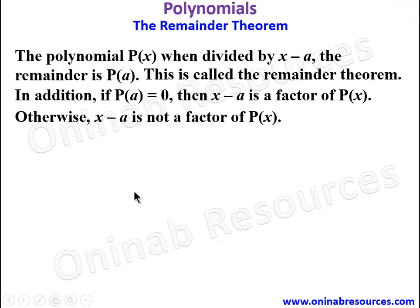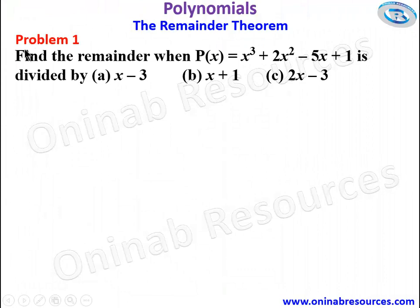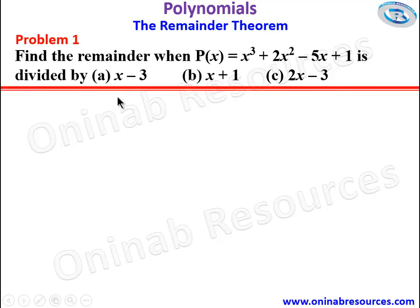So we now look at some problems on application of the remainder theorem. For problem one, we have to find the remainder when p of x equals x cubed plus 2x squared minus 5x plus 1 is divided by: a) x minus 3, b) x minus 1, and c) 2x minus 3.